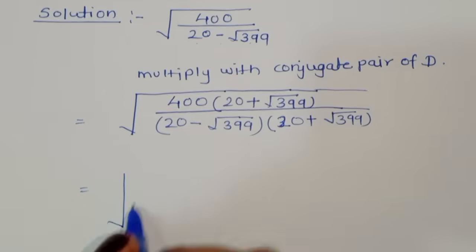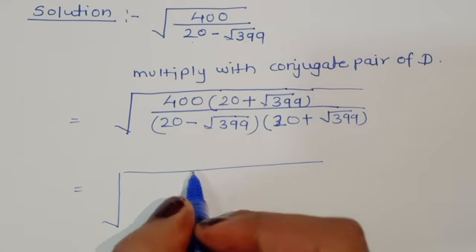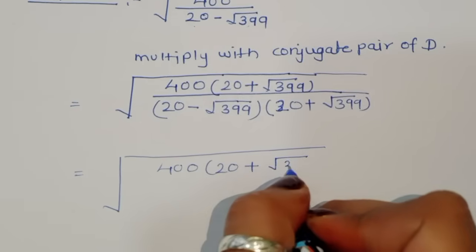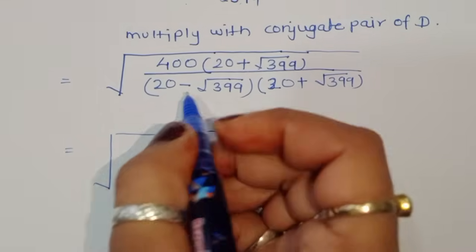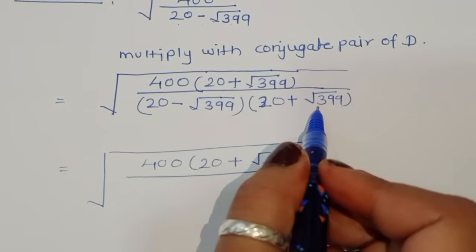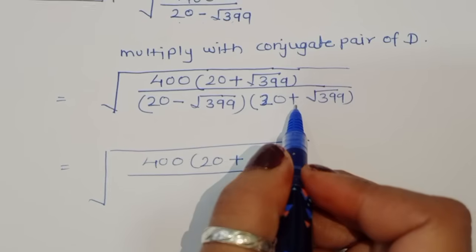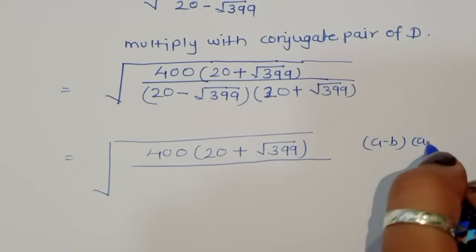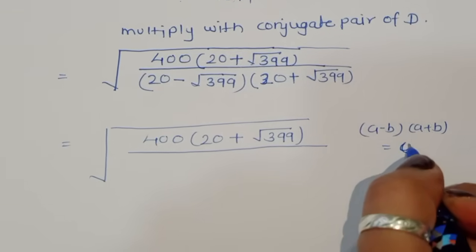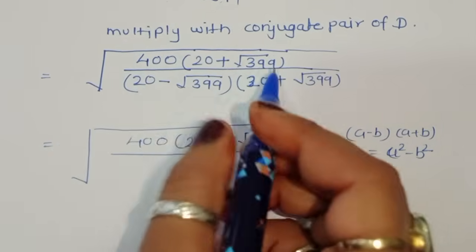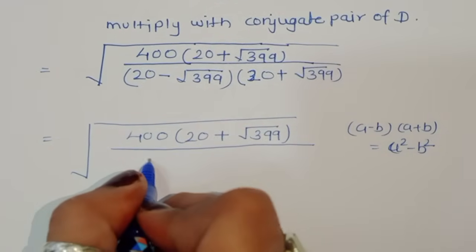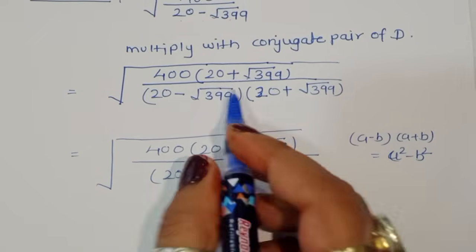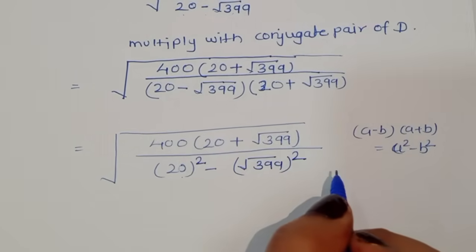This gives us 400 times (20 plus √399) divided by — notice this is of the form (a minus b)(a plus b), which equals a² minus b². Here a is 20 and b is √399. So the denominator becomes 20² minus (√399)², which is a² minus b².